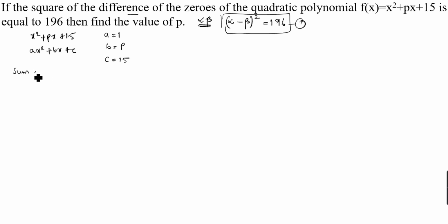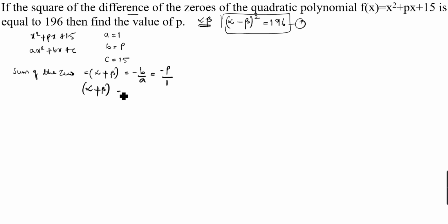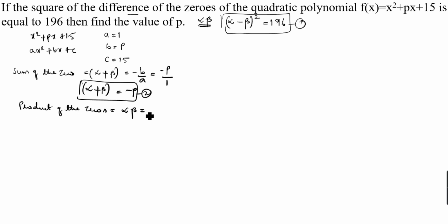The sum of the zeros: alpha + beta = −b/a. Here b = p and a = 1, so alpha + beta = −p. This is the second equation. The product of the zeros: alpha × beta = c/a = 15/1 = 15. So alpha × beta = 15. This is the third equation.